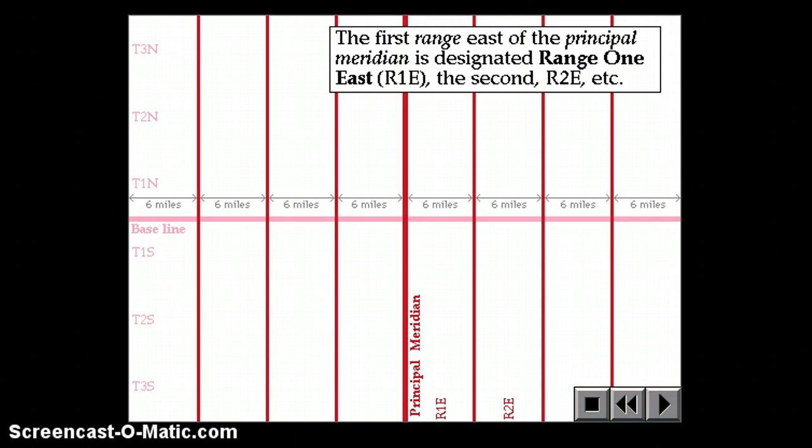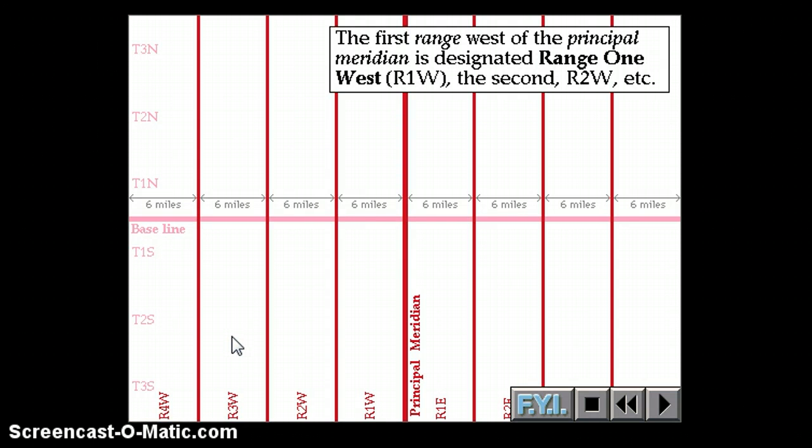These are range 1 east, range 2 east, range 3 east, range 4 east, and we also have range 1 west, range 2 west, R3 west, R4 west.